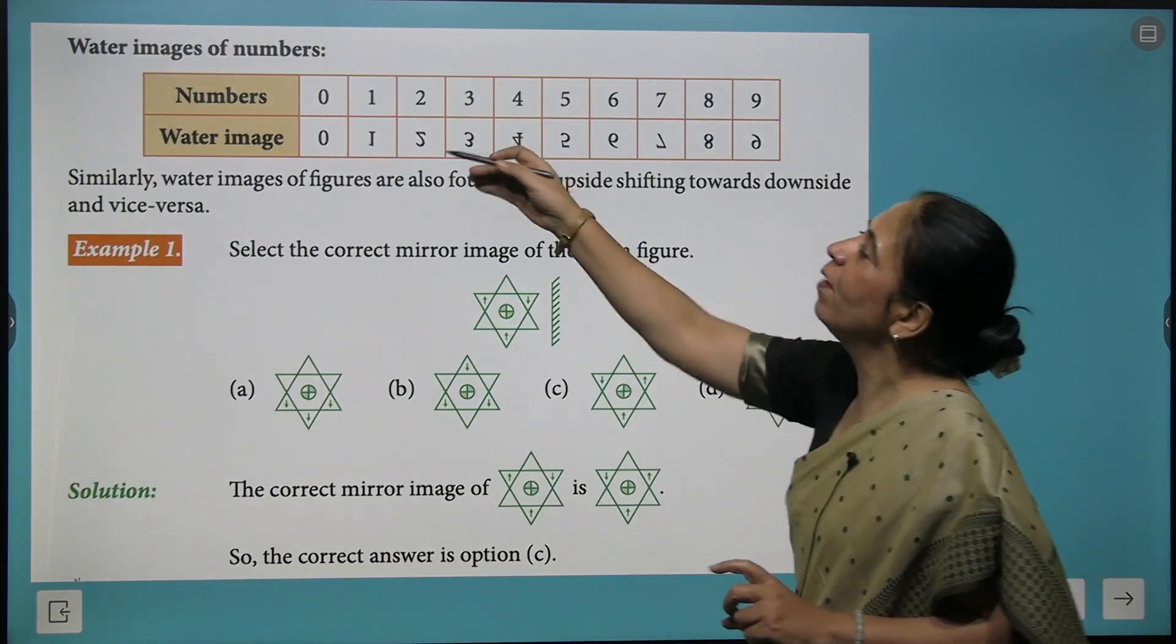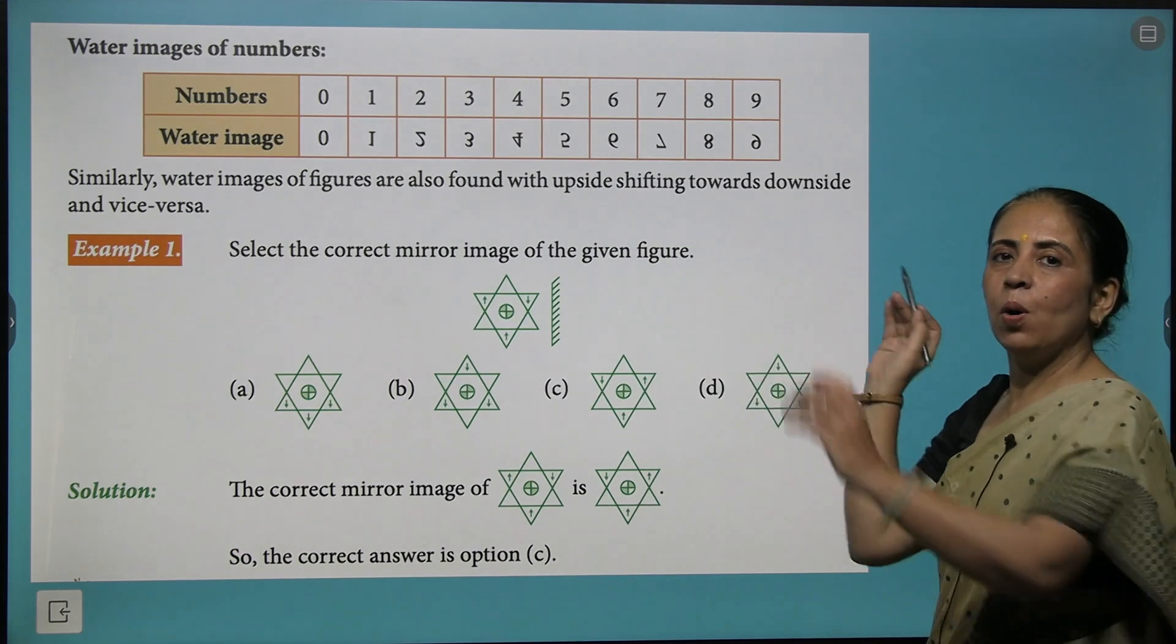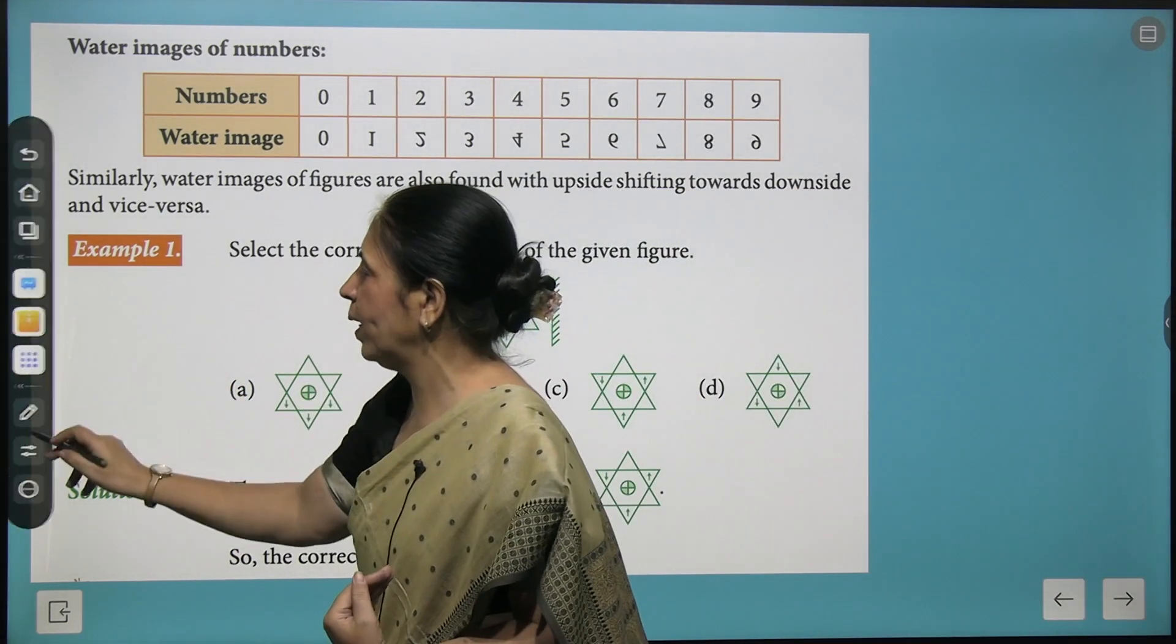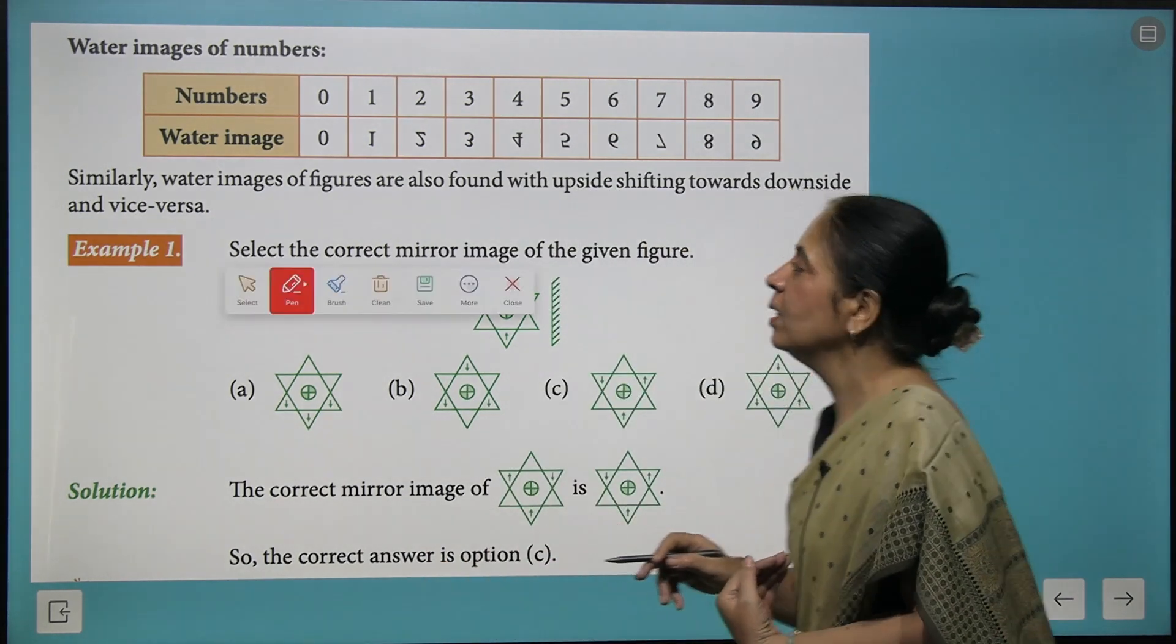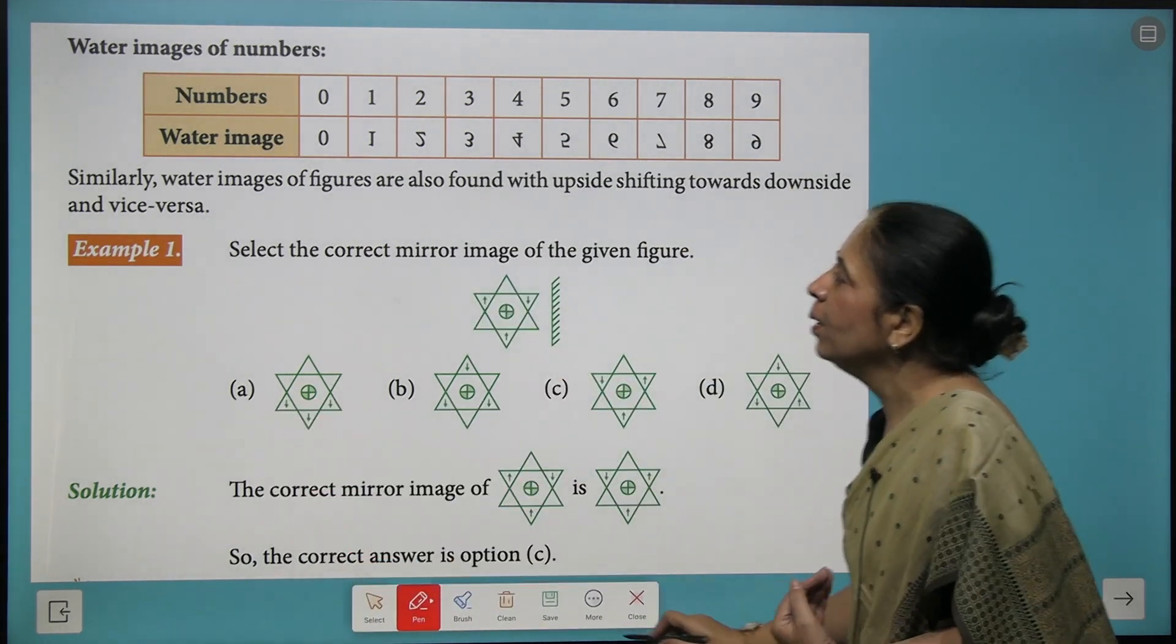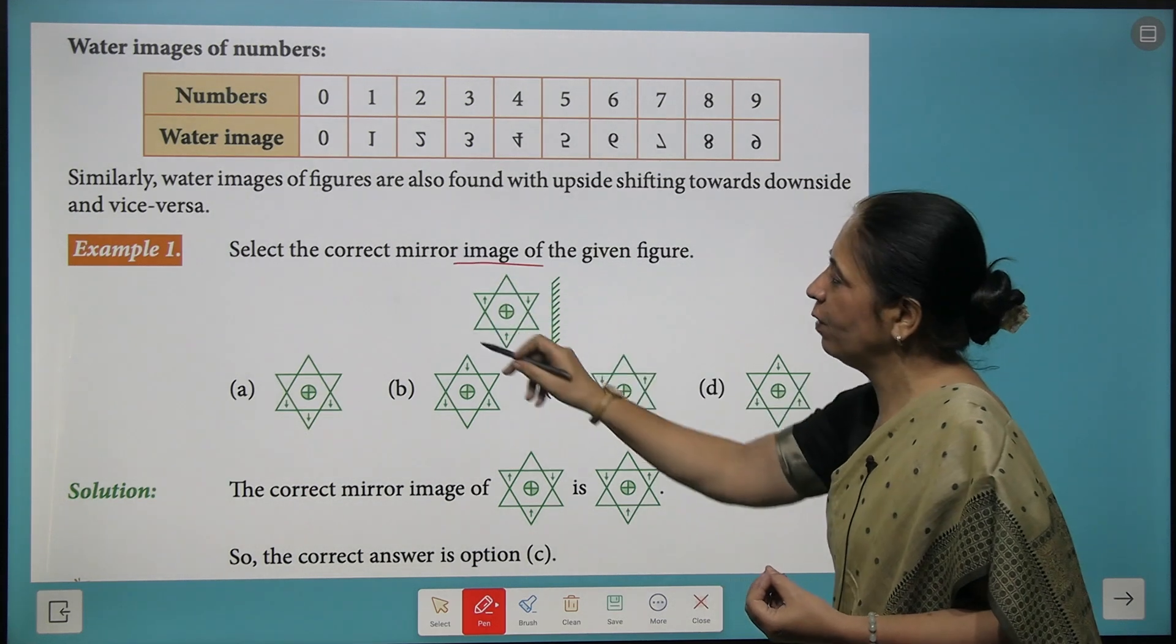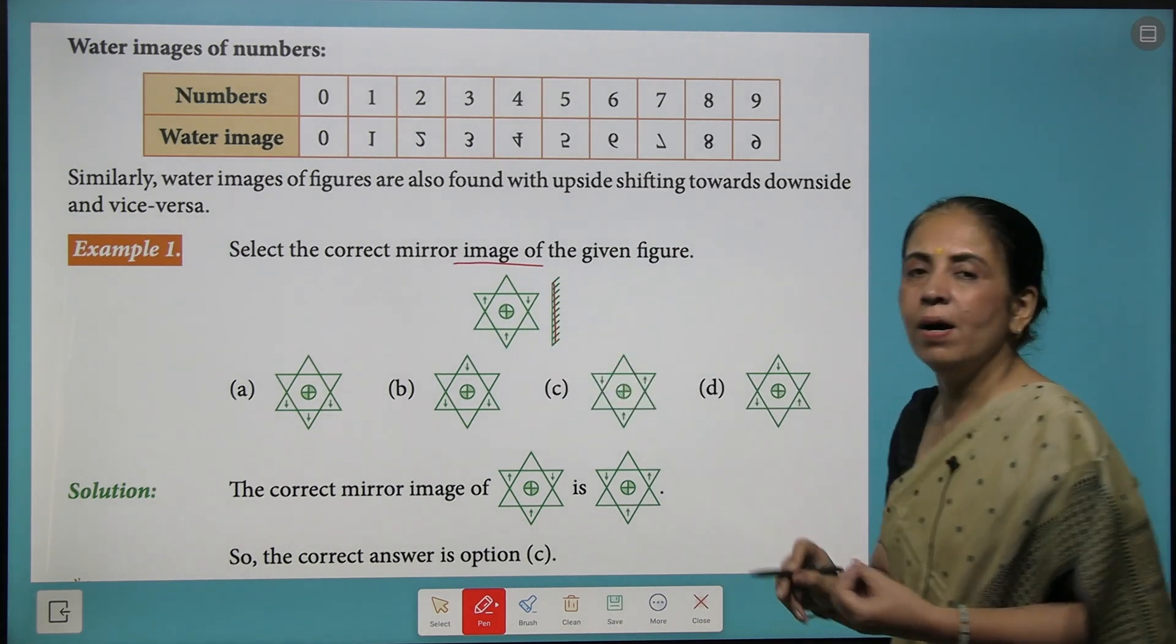Now moving further we have numbers as well. How the numbers give the water images and after this we come to examples. So what do you see here? We have to select the correct image of the given figure. And here we have a mirror.